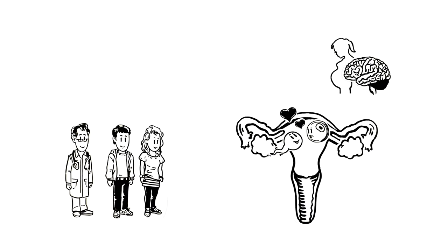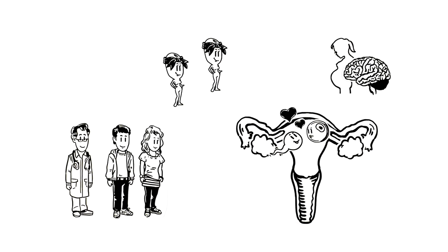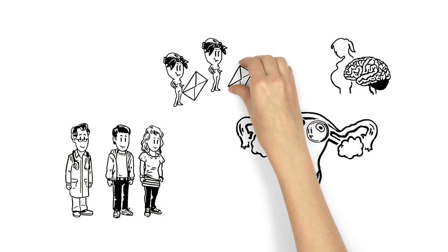If the egg cell is fertilized, the concentration of the feminine sex hormone estrogen increases in the blood. Among other things, this messenger has the task of informing the body of the pregnancy.